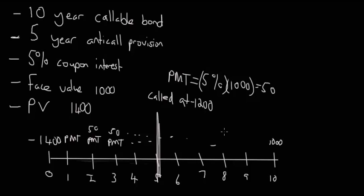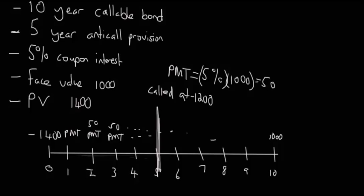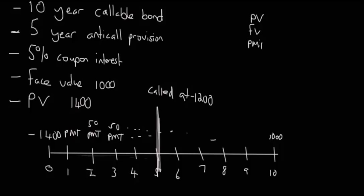Let's put down our variables: present value, future value, PMT, I, and N. In this case, I is what we're going to calculate as the yield to call. The present value is minus 1400. The coupon payment is still 5% coupon interest of its face value, so 5% of 1000 equals 50.